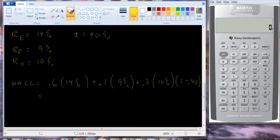Point 6 times 14 is 8.4. Point 1 times 9 is .9. And then we have .3 times 10, 10%, times 1 minus .4, which is .6. So we get 1.8. And let's add those together, 1.8 plus .9 plus 8.4 gives us 11.1%.